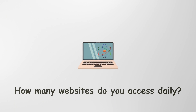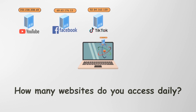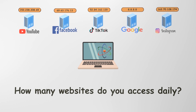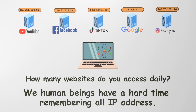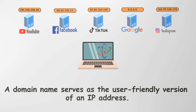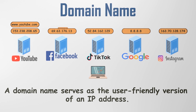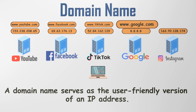But there is still a problem. How many websites do you access daily? YouTube, Facebook, TikTok, Google, Instagram, and many more — hundreds, maybe thousands. But do you know the IP address of any of those? None of us can remember them all. IP addresses are a set of numbers, which is perfectly fine for computers, but we human beings have a hard time remembering that type of address. To simplify things, we can associate an IP address with a human-readable name, known as a domain name. A domain name serves as the user-friendly version of an IP address.